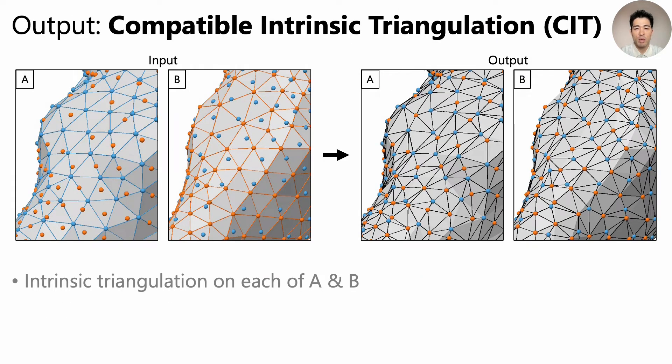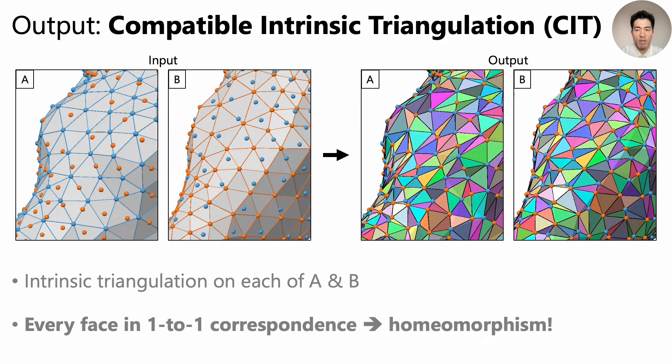Our output is a compatible intrinsic triangulation, or CIT in short. It's an intrinsic triangulation on each of A and B. And it is constructed in such a way that every face is in one-to-one correspondence. Here, I highlight some corresponding faces around vertex 1-rings. So this is our new way of defining homeomorphisms between surfaces.